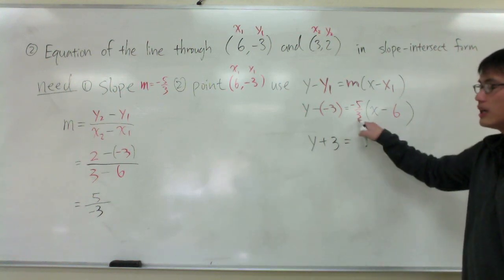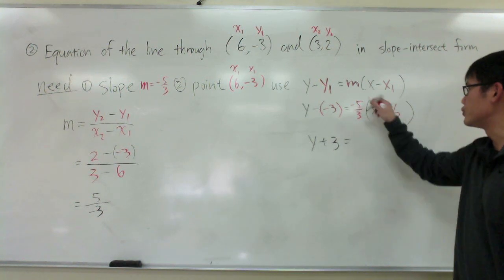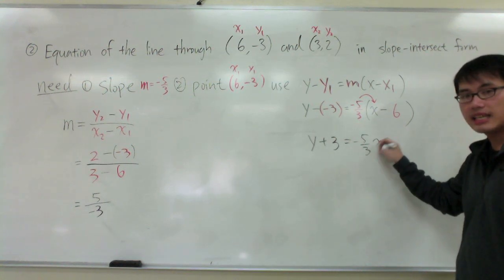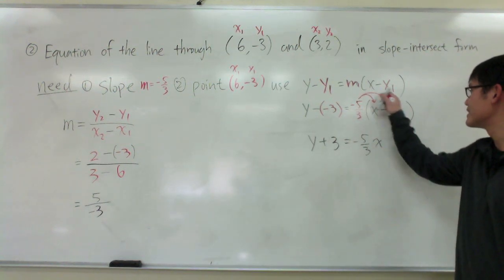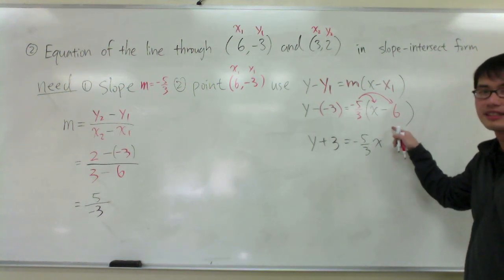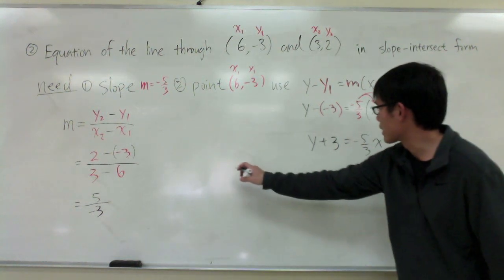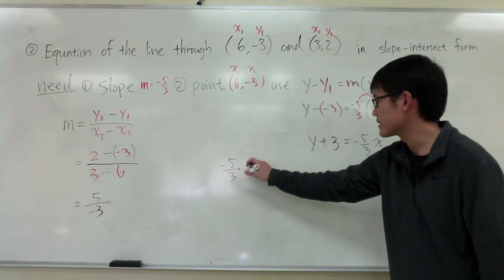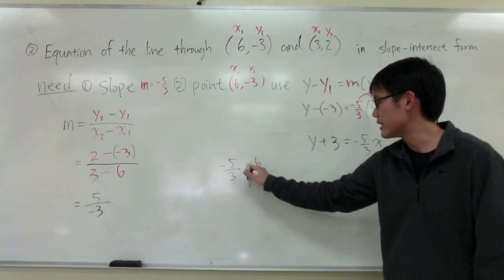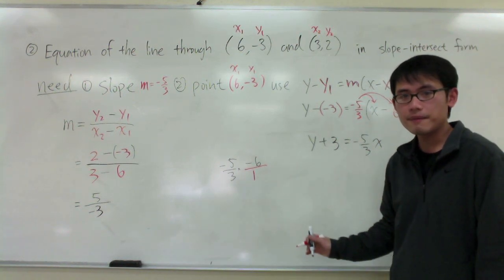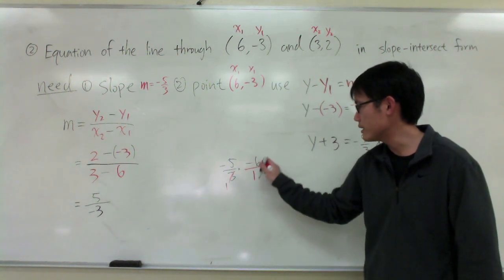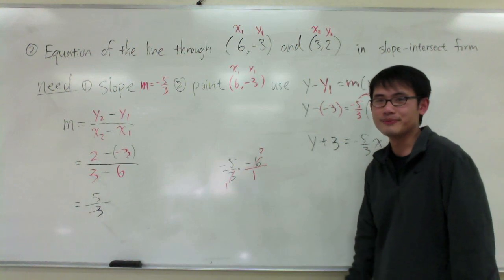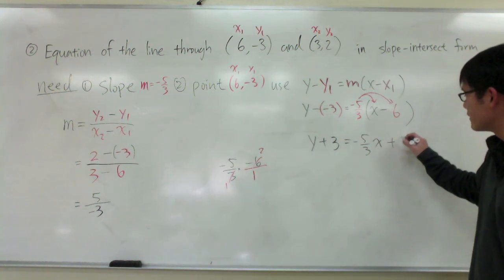Equals to, I see I have a parenthesis. And this fraction is in front of the parenthesis. I need to distribute the negative 5 thirds inside. I will first get negative 5 thirds x. And I will second get negative 5 thirds times negative 6. So, let's do the calculations right here. Negative 5 thirds times negative 6. This is like negative 6 over 1. And I can simplify these fractions. This is 1. This is 2. And we have negative 5 times negative 2. So, that will turn out to be a positive 10 like that.